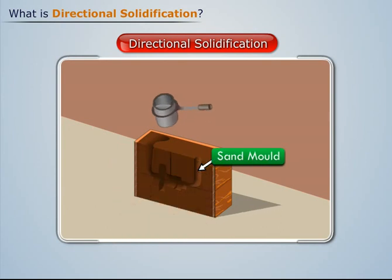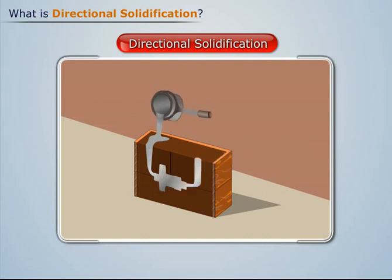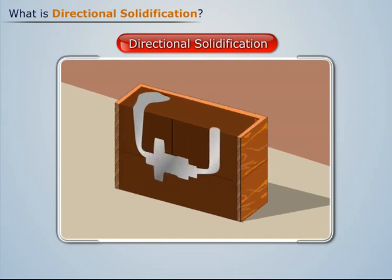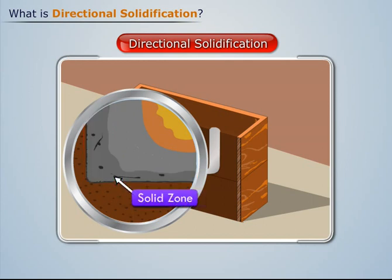When we pour the molten metal into the sand mold, the molten metal solidifies in the mold cavity, resulting in the formation of a solid shell of specific thickness on the internal surface of the mold. The region where the solid shell exists is referred to as the solid zone.